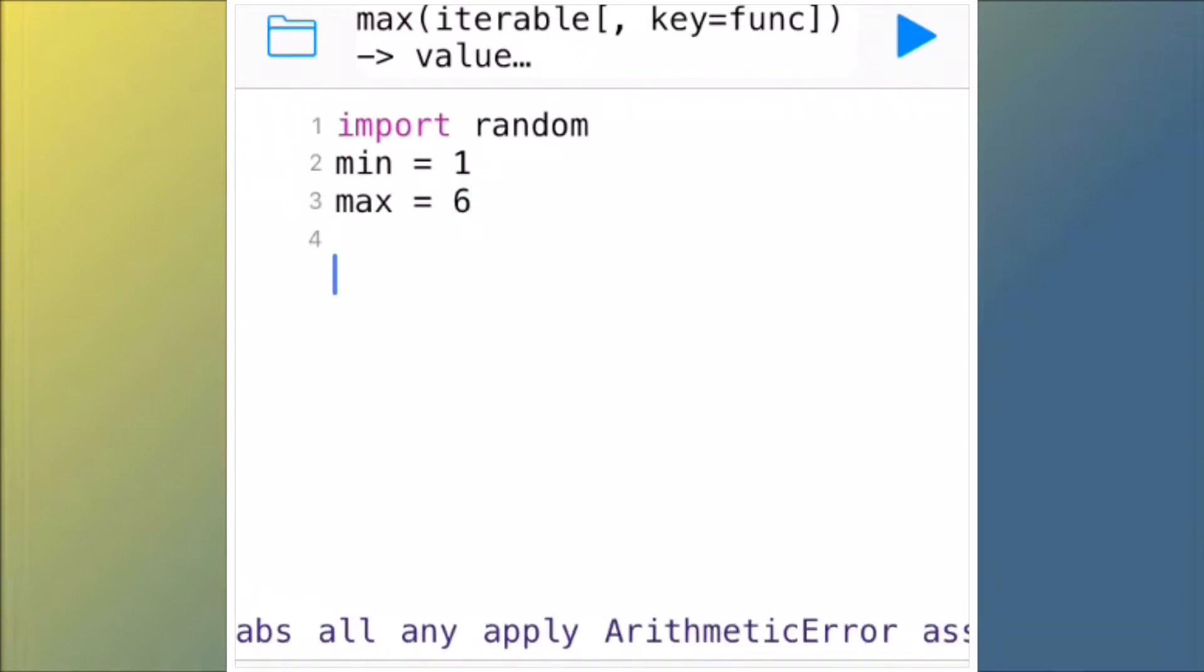On the fifth line, roll underscore again space equals space two quotation marks yes, with two quotation marks. Then do two returns so you're on the seventh line. Skip the sixth line and the fourth line as well.